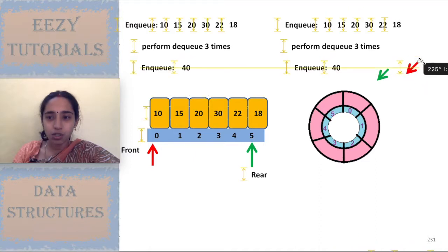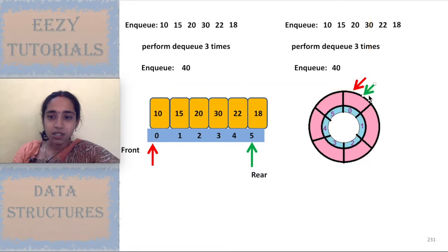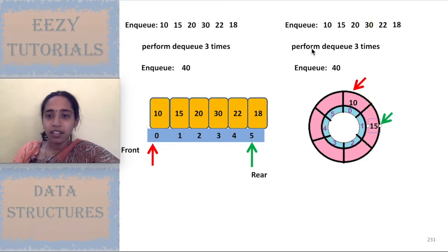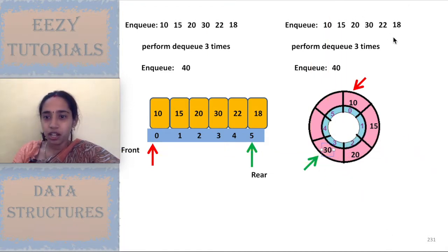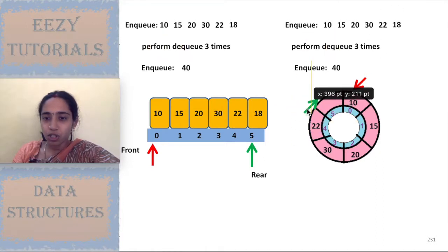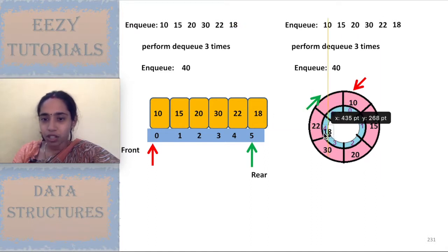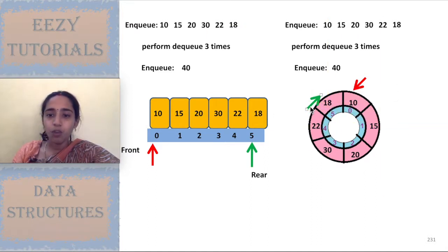For the circular queue, similarly, front and rear start at the 0th index. I enqueue 10, then 15 — moving the rear pointer to the next position. Then enqueue 20, 30, 22, and 18, moving the rear pointer each time and placing each element in that position. The enqueue operation for the circular queue is also now complete.